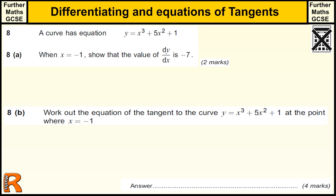Differentiating and equations of tangents, Further Math GCSE. We've got an equation here: x cubed plus 5x squared plus 1. When x equals minus 1, show the value of dy by dx is minus 7.